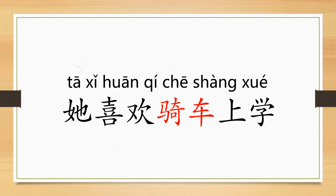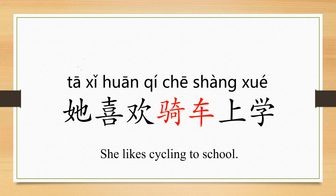她喜欢骑车上学。上学 means 'go to school.' 她喜欢骑车上学 — she likes cycling to school.